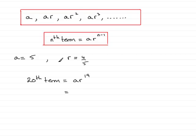So what would that be? It would be 5 multiplied by 4 fifths to the power 19.